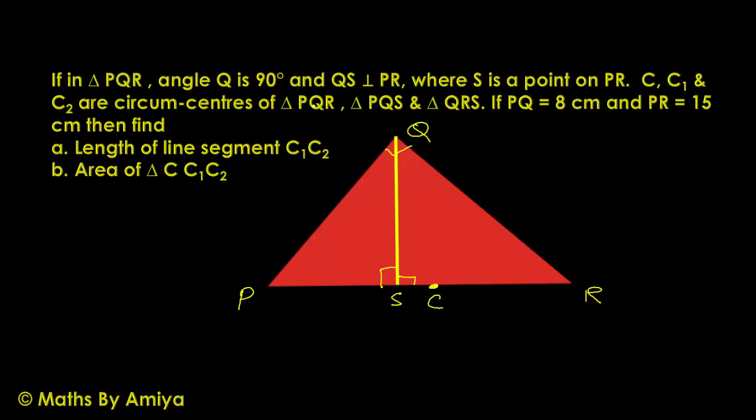C1 is the circumcenter of PQS. PQS is again a right angle triangle, so C1 is the midpoint of side PQ. And C2 is the circumcenter of QRS, which is again a right angle triangle. So C2 is the midpoint of side QR. I hope we used the concepts.